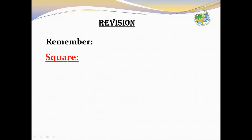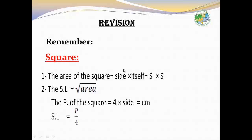Remember the square. The area of a square equals side length times itself — side times side. The side length equals the square root of the area. The perimeter of a square equals 4 times the side length, and the side length equals perimeter over 4.